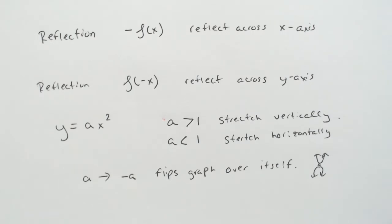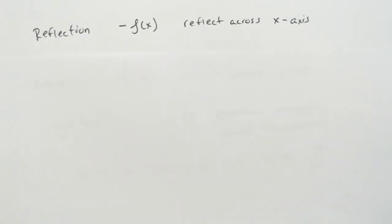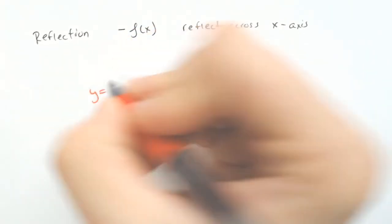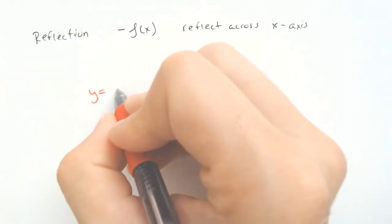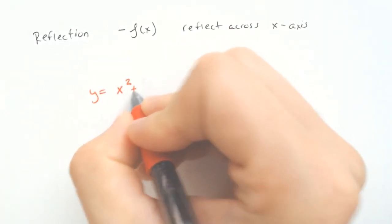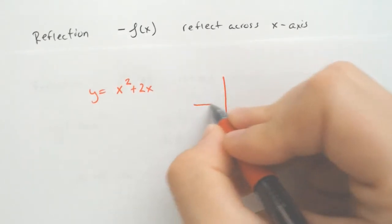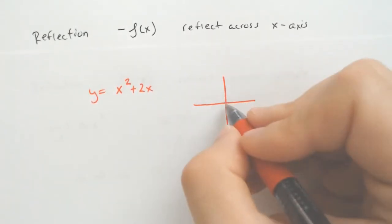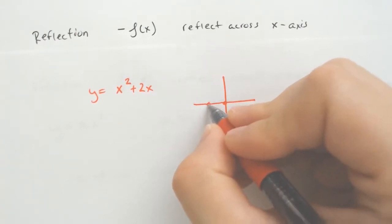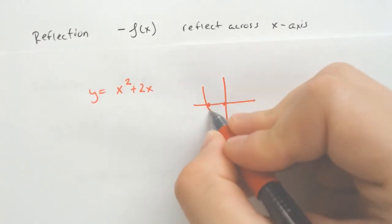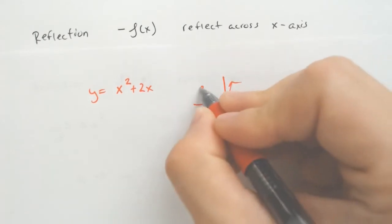So let's go through some examples and show you what that means, starting with a reflection over the x-axis. Let's say we have y equals x squared plus 2x. So that graph, for those of you that don't know, which I'm going to graph for you real fast, it's going to be here and here at zero and negative two. It's going to look something like that.